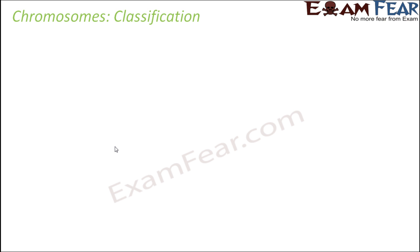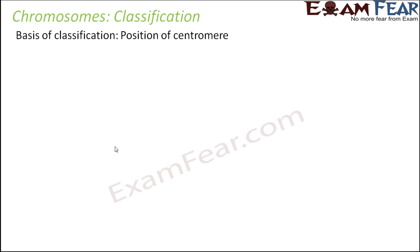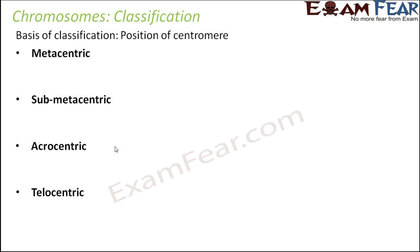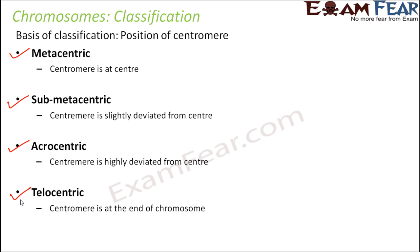Based on the position of the centromere in a chromosome, chromosomes can be classified into four types. The basis of classification is the position of the centromere. The four types are: metacentric, submetacentric, acrocentric, and telocentric.